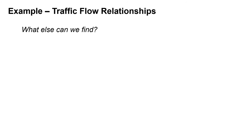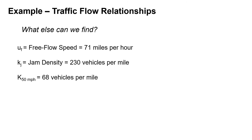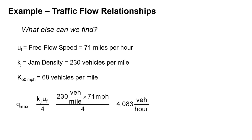Continuing with this scenario — free flow speed 71 miles per hour, jam density 230 vehicles per mile, density at 50 mph is 68 vehicles per mile — we can find additional values. The max flow rate Q max equals K sub j times U sub f divided by 4, so 230 times 71 divided by 4 gives a max flow rate of 4,083 vehicles per hour. Note that in practice this is a very high flow rate for a single lane, but these are the values the equations yield.